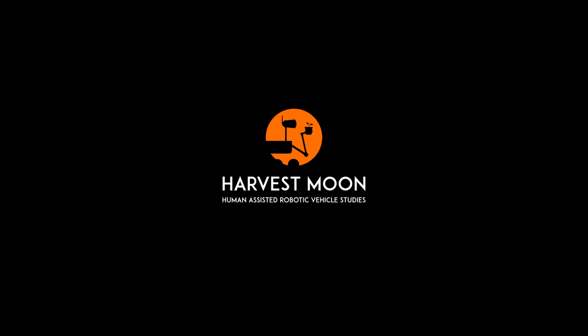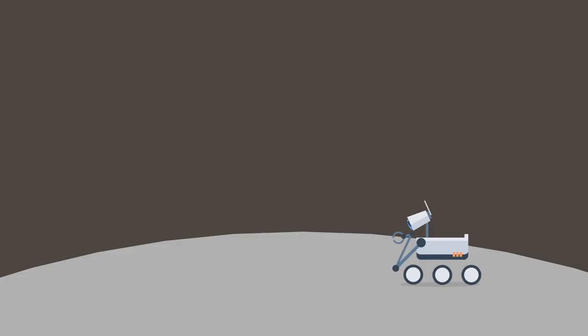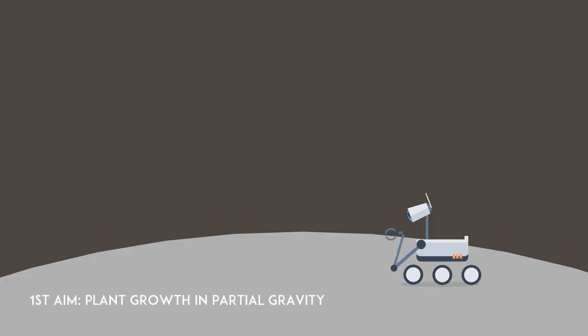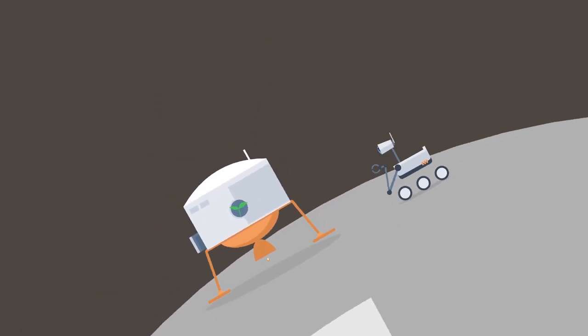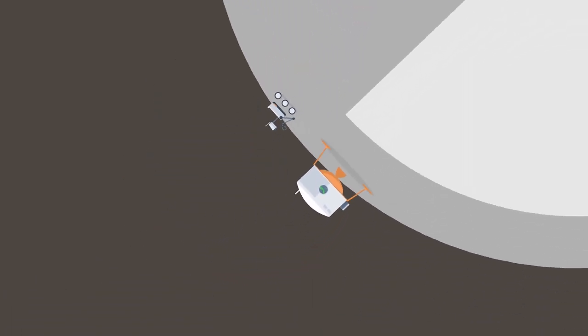The Harvest mission has three major aims. Harvest's main mission will consist of a rover and plant growth chamber system that will be deployed to the South Pole on the lunar far side to investigate plant growth in partial gravity.